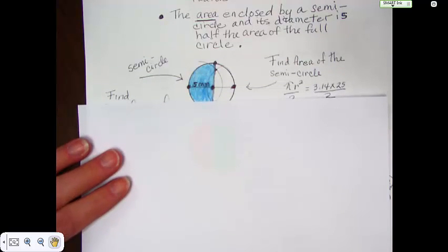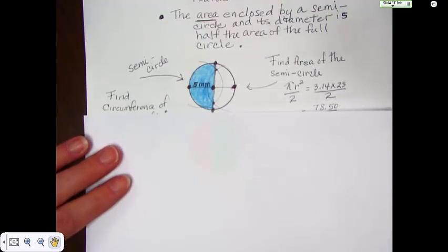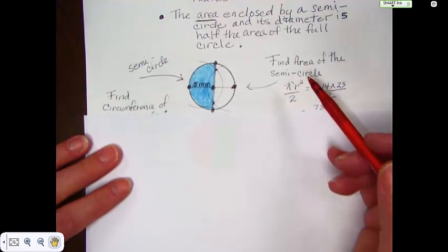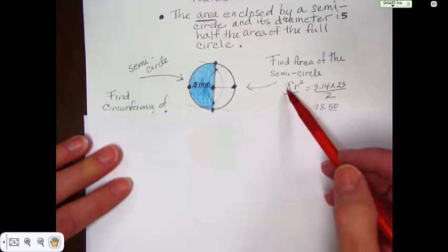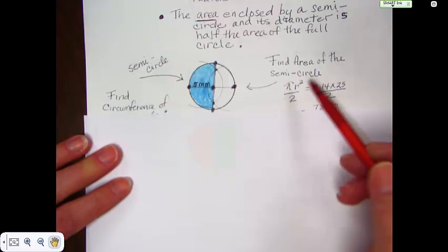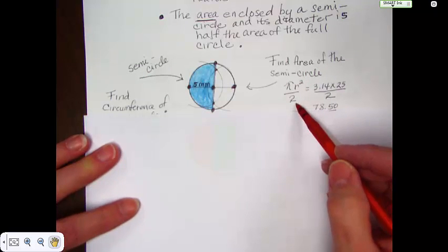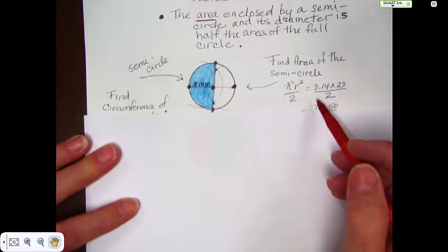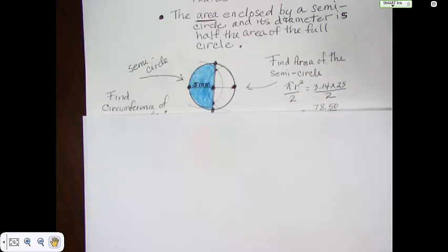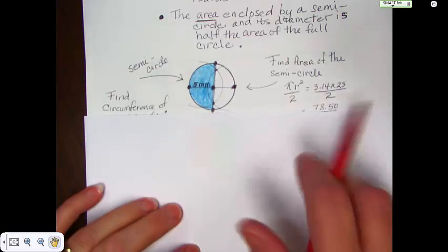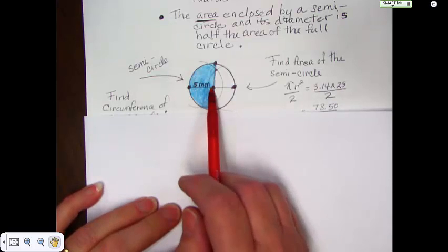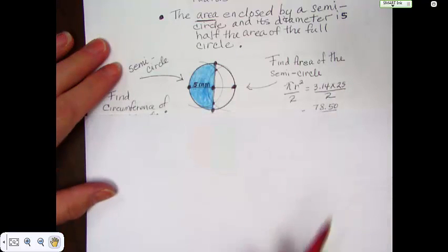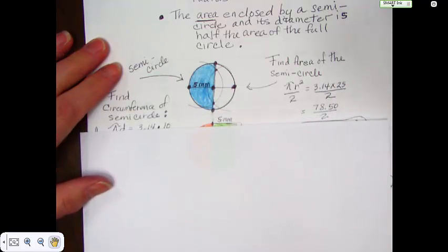To find an area of a semicircle, it's really a very basic thing. You use the area formula to find the area of a circle, which is pi r squared, and you would divide it by 2. So you would take 3.14 times 25, which happens to be the radius squared, 5 times 5. And then you would take that amount and divide it by 2.